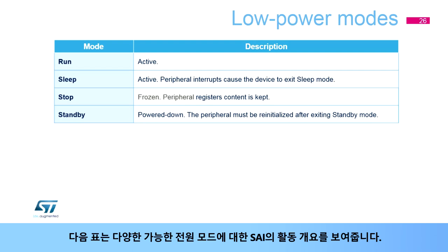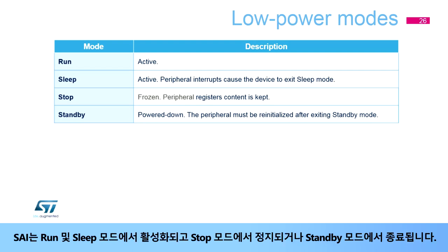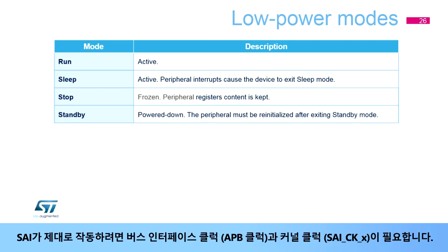The following table shows an overview of the SAI activity for the various possible power modes. The SAI is active in run and sleep modes, frozen in stop mode, or powered down in standby mode. The SAI needs the bus interface clock, or APB clock, and the kernel clock, or SAI-CKX, to work properly.